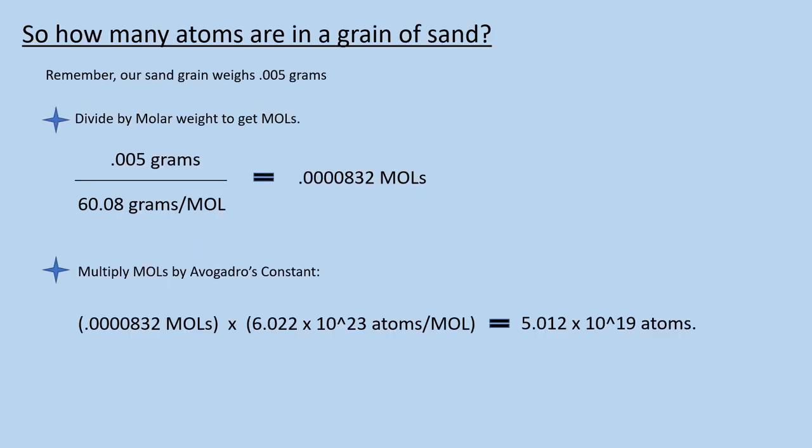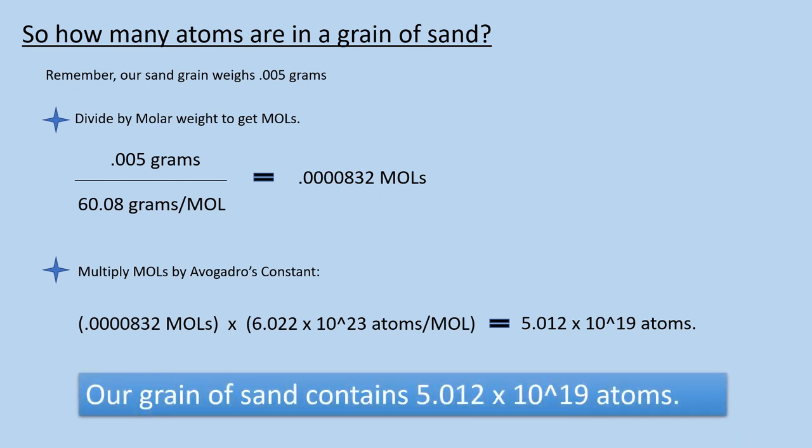Now we can use Avogadro's number to calculate the number of atoms in our 0.005 gram grain of sand. We'll divide grams by the molar weight to get the total moles. Then we multiply the moles times Avogadro's constant to get the total atoms in our grain of sand. The result is, our grain of sand has 5.012 times 10 to the 19th atoms.